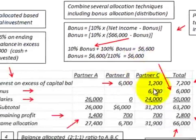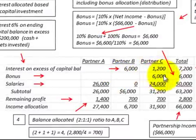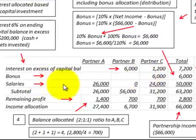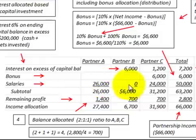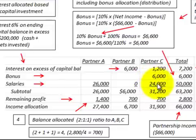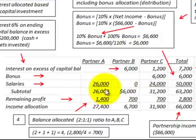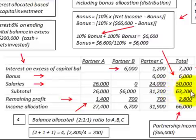That $6,000 bonus is only allocated to Partner C, for a total bonus amount of $6,000. For salaries, Partner A gets $26,000, Partner B gets zero per the partnership agreement for this year, and Partner C gets $24,000, for a total salary amount of $50,000. Subtotaling interest, bonus, and salaries for all partners gives us $63,200.